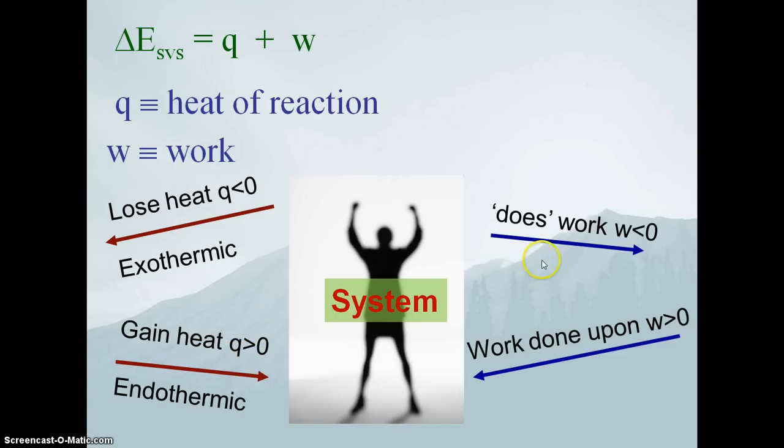We also have a similar sign convention on work. If the system is doing work on the surroundings, the sign of W would be less than zero. If work is done by the surroundings on the system, then the sign of work will be greater than zero.